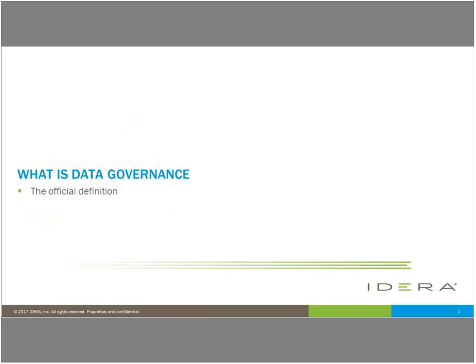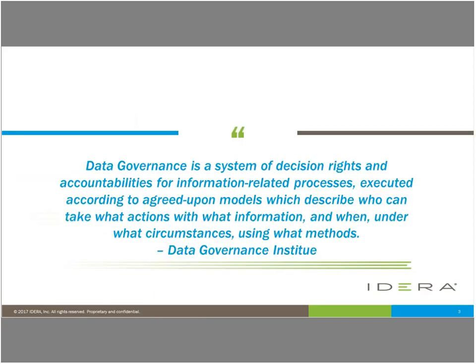So what is data governance? This is the official definition by the Data Governance Institute. Data governance is a system of decision rights and accountabilities for information-related processes, executed according to agreed-upon models which describe who can take what actions with what information and when, under what circumstances, using what methods. That's quite a mouthful. So to break it down, I'm going to take it piece by piece.